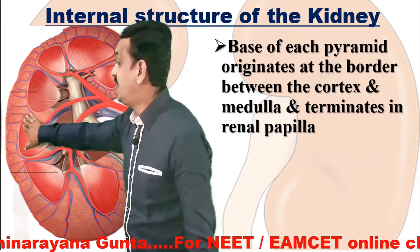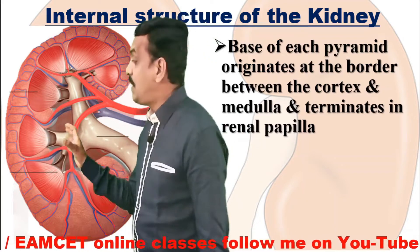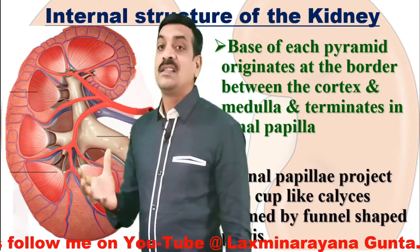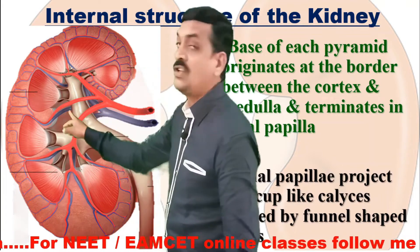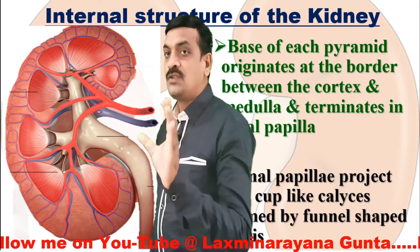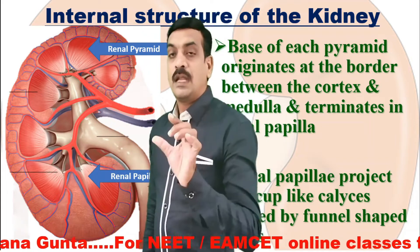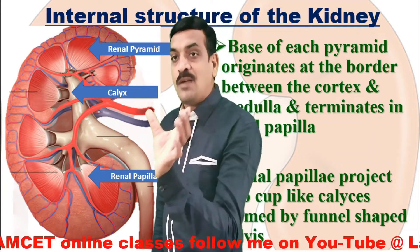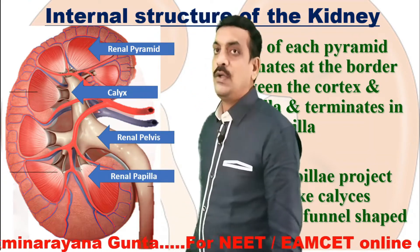Each renal pyramid terminates in a renal papilla. These renal papillae project into cup-like structures called calyces. These calyces are formed by the funnel-shaped pelvis. The renal papillae project into a calyx, and the calyces are formed by the funnel-shaped pelvis. The pelvis is where urine is collected, and this continues as the ureter.